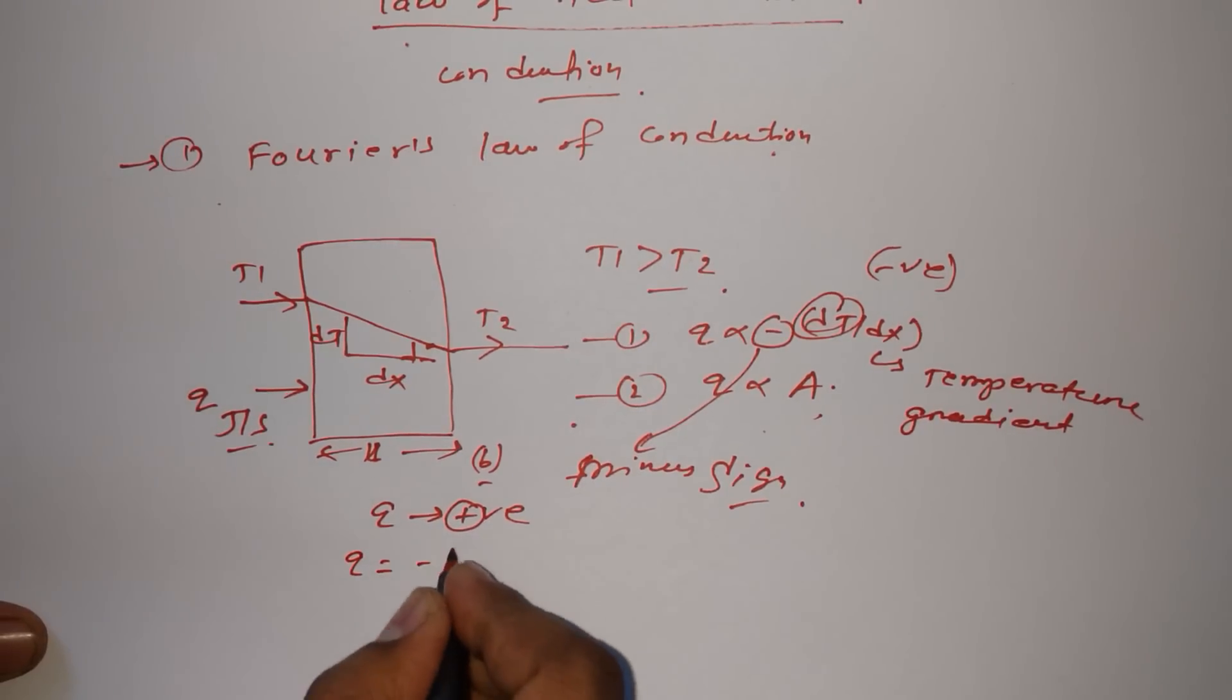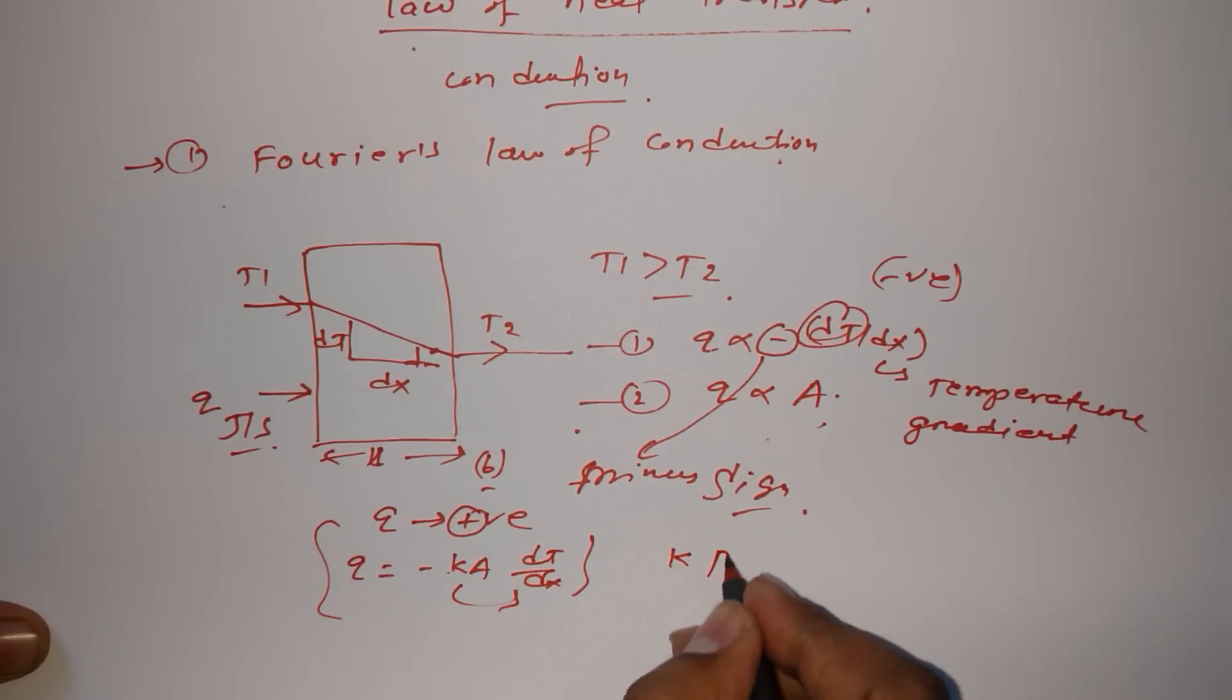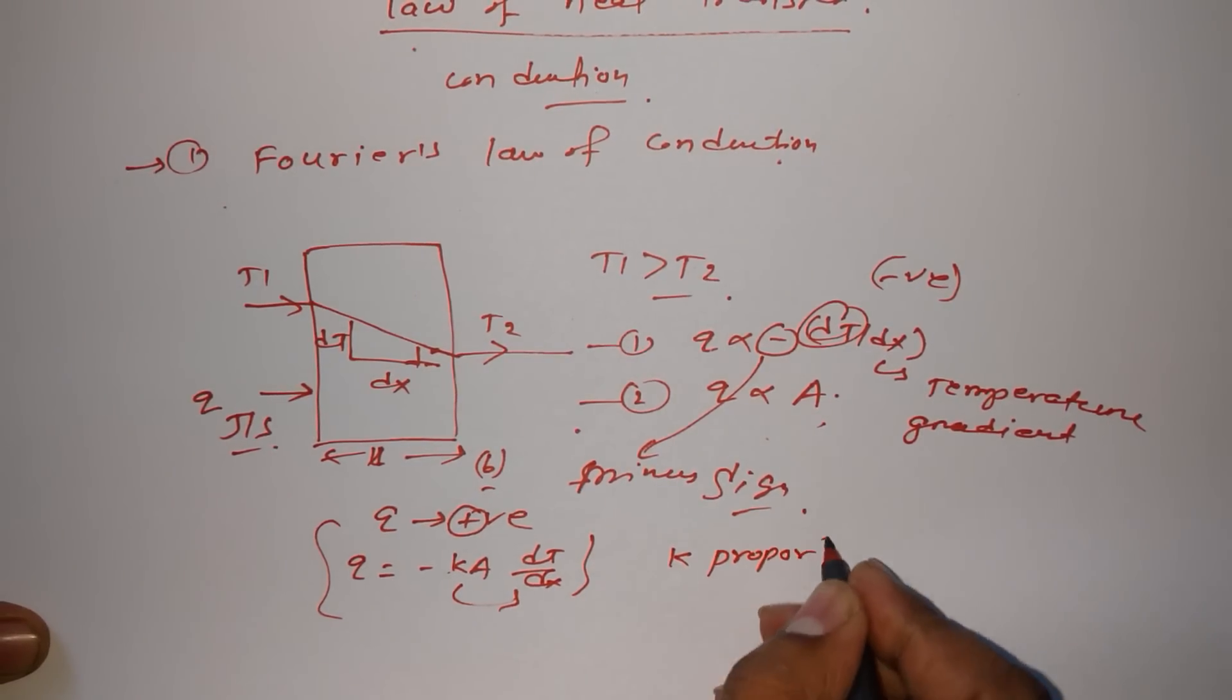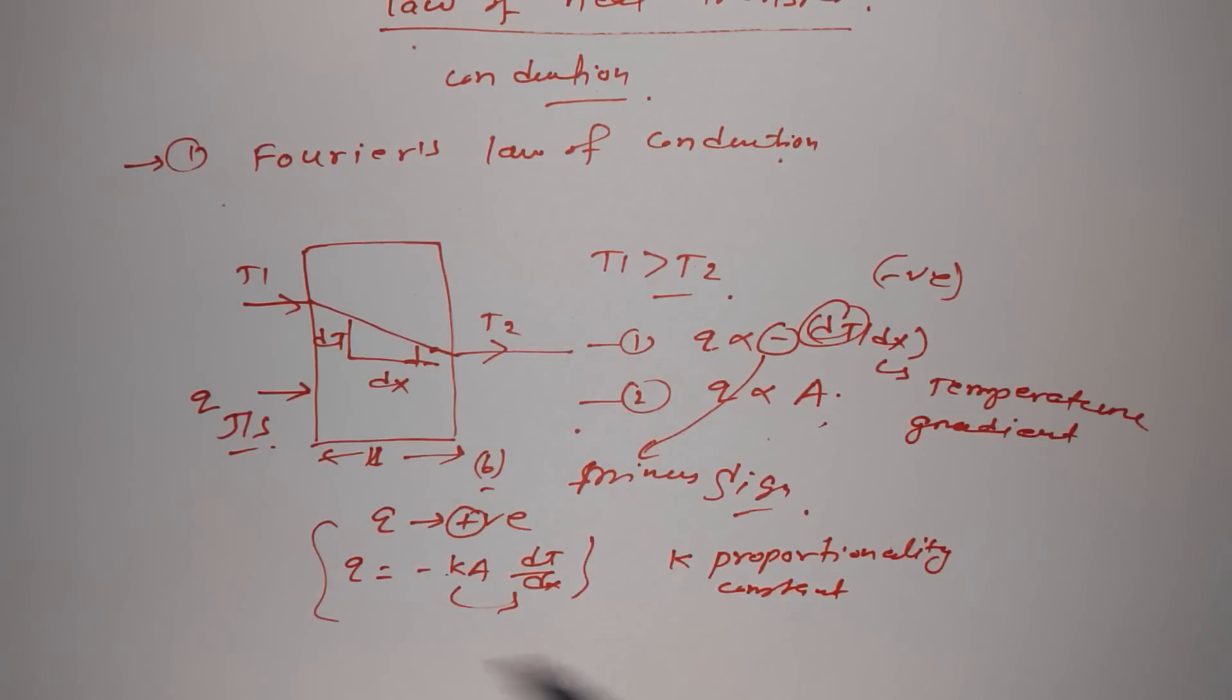Now what is the formula for this? Q equals minus k times A times dT upon dx. Here, k is the proportionality constant. So in this law, what we have to remember is this formula and these two things.